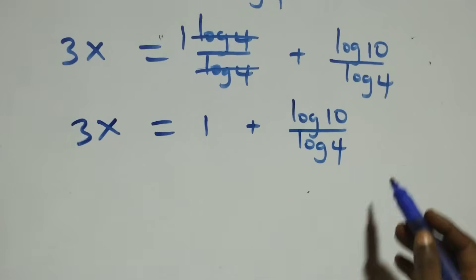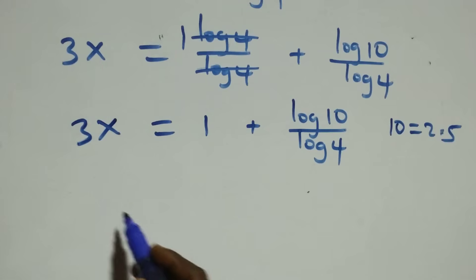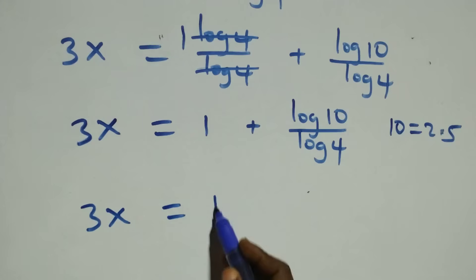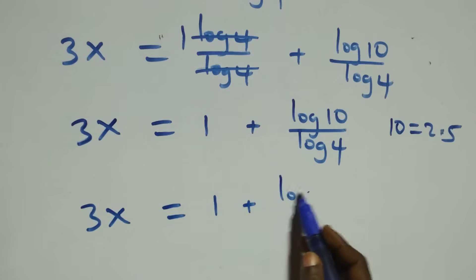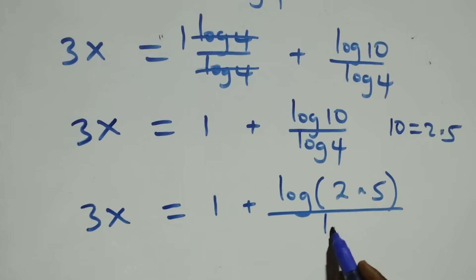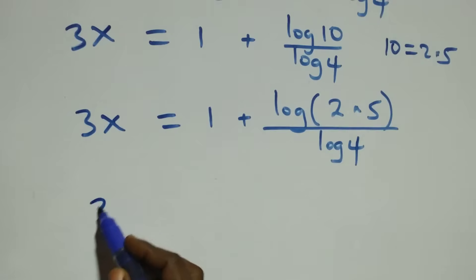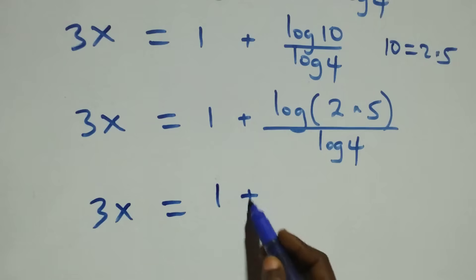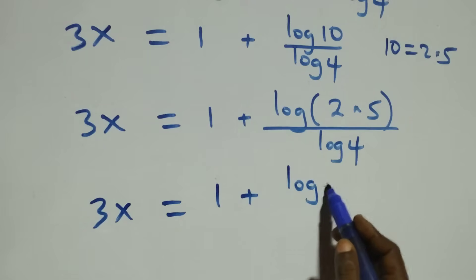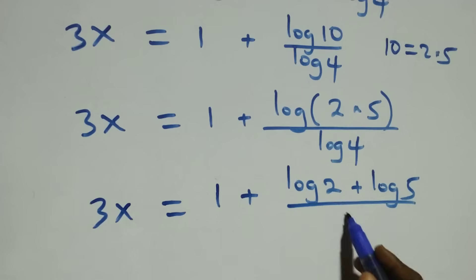Next step: we can write ten as two times five. So what we have here becomes three x equals one plus log of two times five over log four. Applying the log product rule again, this becomes three x equals one plus log two plus log five, all over log four.